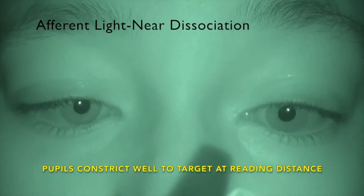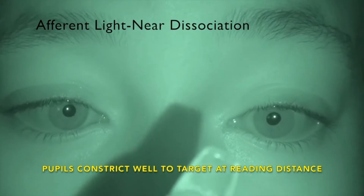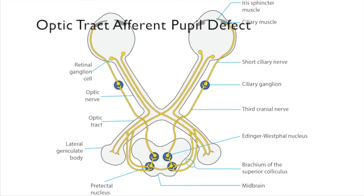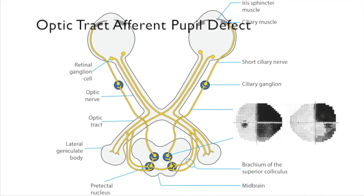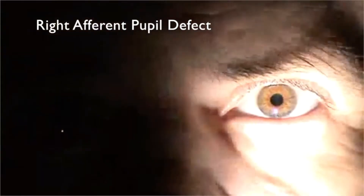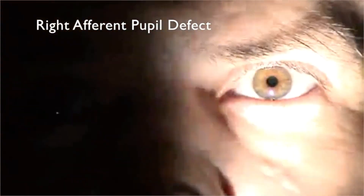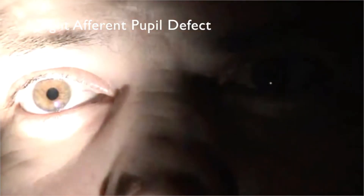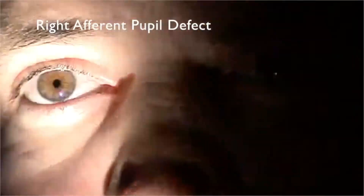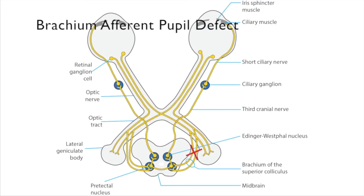This phenomenon is called afferent light-near dissociation. Severe unilateral damage to the optic tract causes a contralateral homonymous hemianopia and a contralateral afferent pupil defect because optic chiasm crossing axons outnumber non-crossing axons. Unilateral damage to the brachium of the superior colliculus may cause a contralateral afferent pupil defect without producing a visual field defect. This phenomenon is rare.